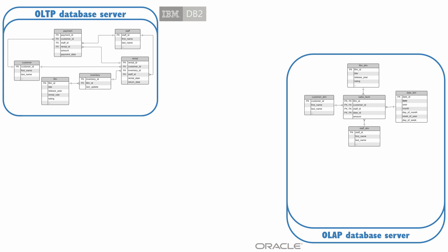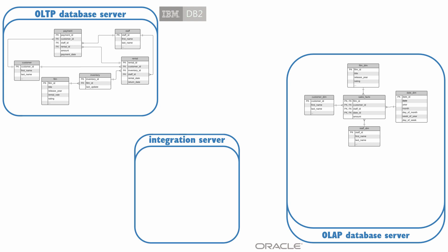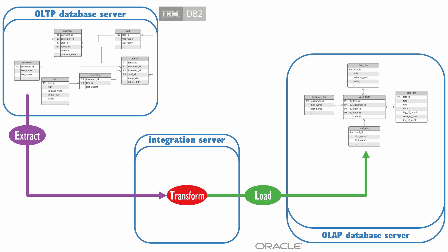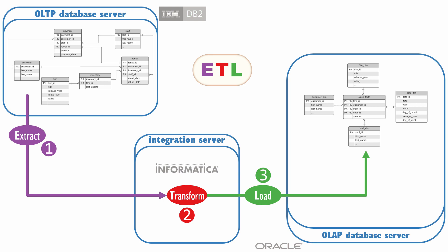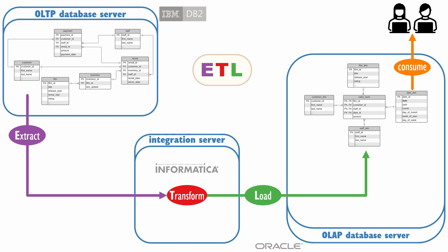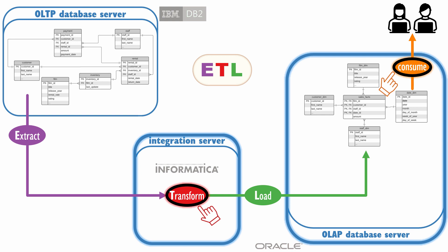An integration server was inserted in between the source database and the data warehouse. Software would read directly from operational tables, stream the data through to transform it in memory, and then insert it into the star schema, never landing data onto the integration server. PowerCenter from Informatica was an example of this type of software. Transforming the data before it was loaded into the target database was why the ETL acronym was coined. The relational OLAP server still processed analytic queries, but there was no longer contention for its resources because the transformations were processed on another server.